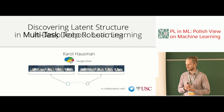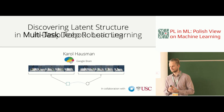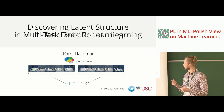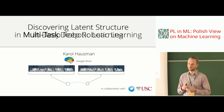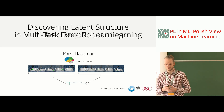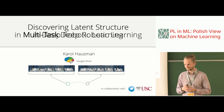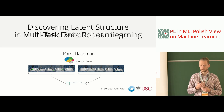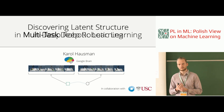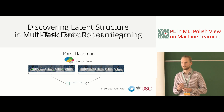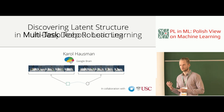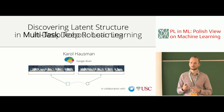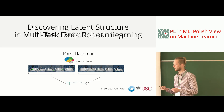Today I'd like to talk about discovering latent structure in deep robotic learning. I'm a research scientist at Google Brain, and this work has been done in collaboration with wonderful colleagues at DeepMind and University of Southern California in Los Angeles, where I did my PhD. The title should more accurately be about discovering latent structure in multitask deep robotic learning, and I really want to emphasize the multitask aspect.